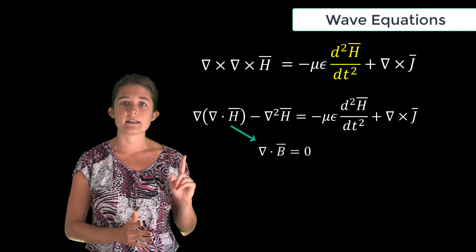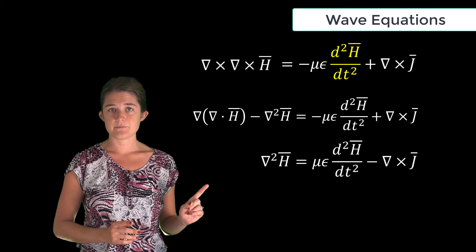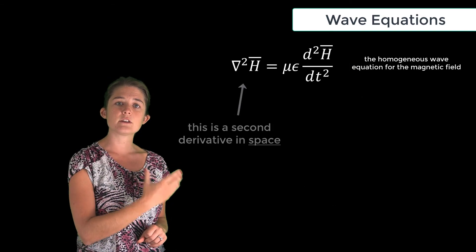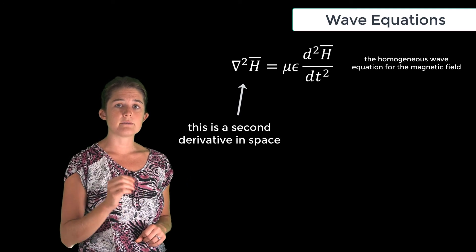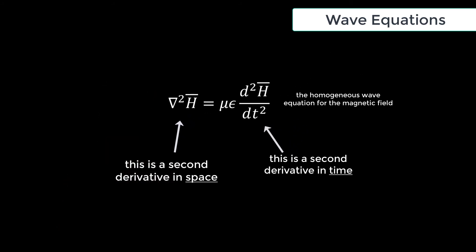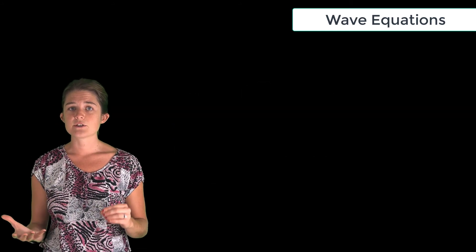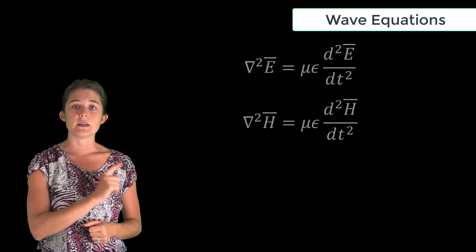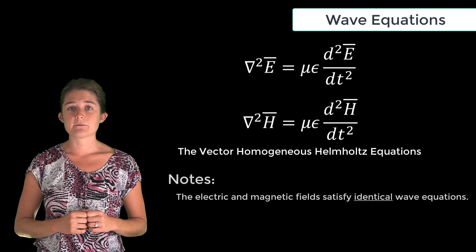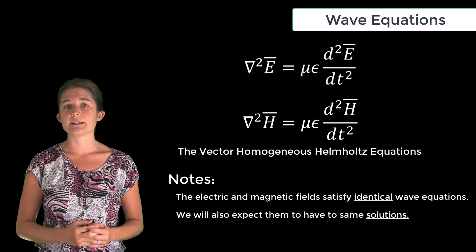Finally, the solenoidal law says that the del dot H term is zero, so we're left with the wave equation for the magnetic field. In a source-free region, the current is zero and the equation reduces to this. Again, the vector Laplacian on the left represents a second derivative in space, related by this equation to a second derivative in time on the right. So what we've just shown is that in a source-free region, the electric and magnetic fields follow the wave equations shown here — also called the vector homogeneous Helmholtz equations. Note that the electric and magnetic fields both satisfy identical wave equations, and these differential equations will also have identical solutions.